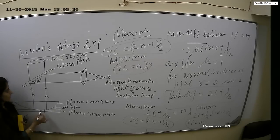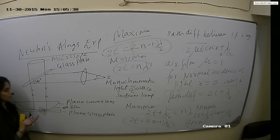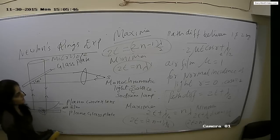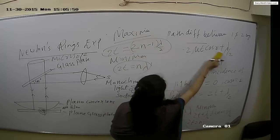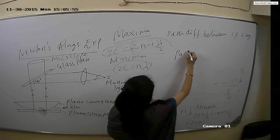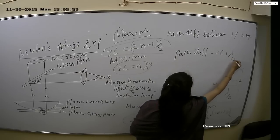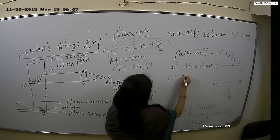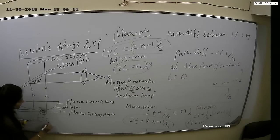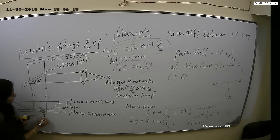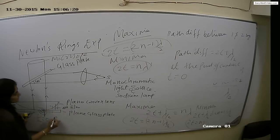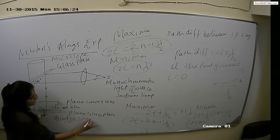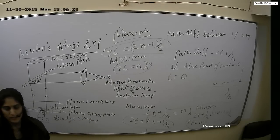Why do we get circular fringes? The reason is that the air film is symmetrical from the point of contact, which is why we get circular fringes. At the center — the point of contact — the thickness is zero, and as we go outward, the thickness keeps increasing. Such a film of increasing thickness is called a wedge-shaped air film.